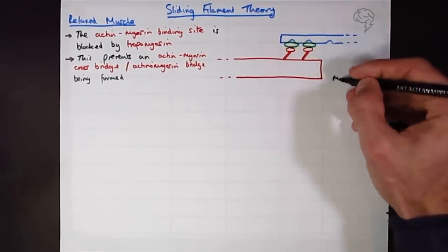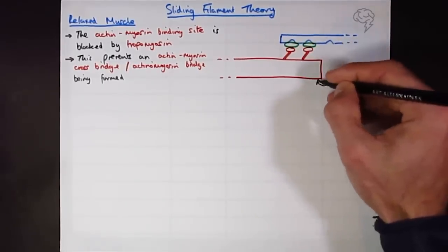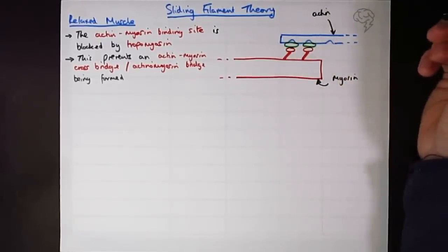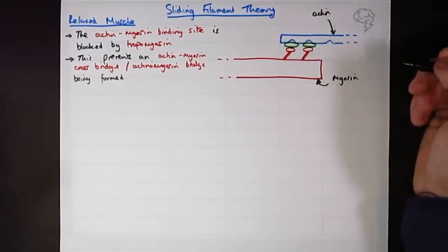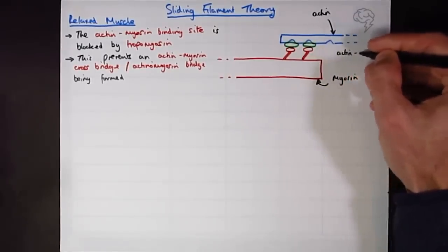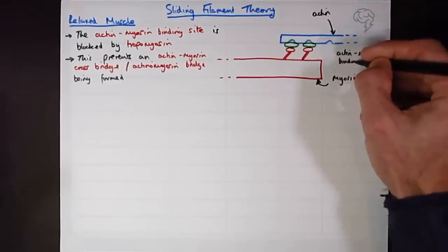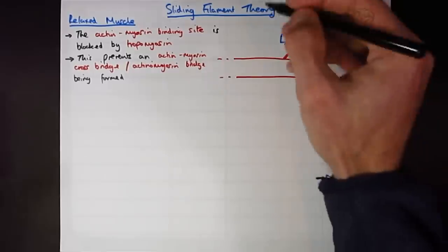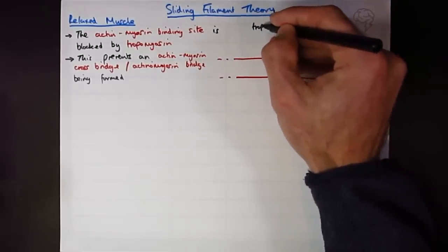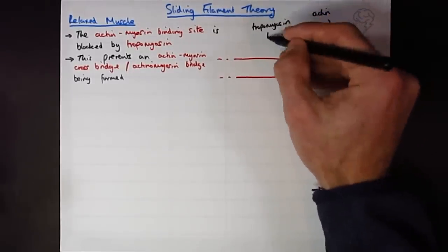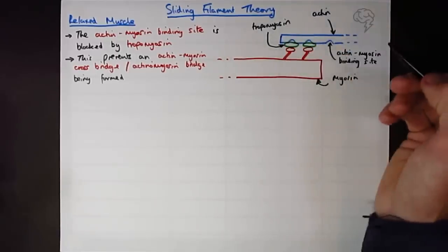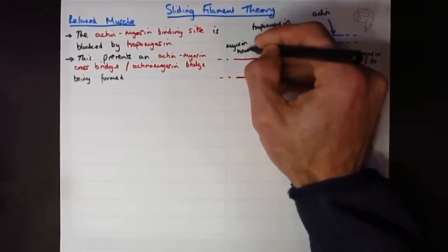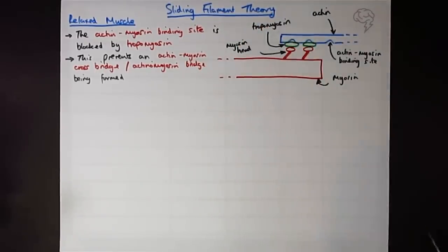So that's what it looks like at rest. Let's label these. We've got myosin, it's a big thick red dude. We've got the actin, which is the blue filament. We've got the actin myosin binding site. We have this protein which is blocking the binding site, it's called tropomyosin. And we've got these guys here, these are the myosin head.